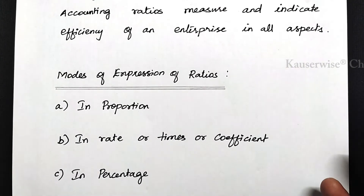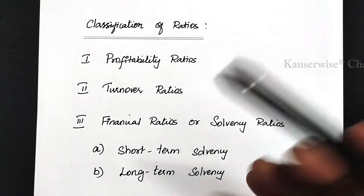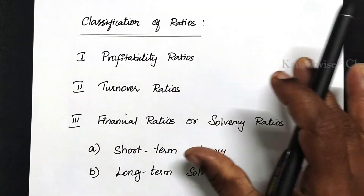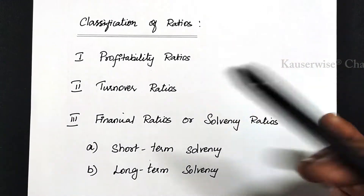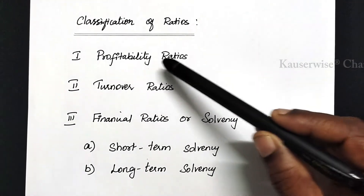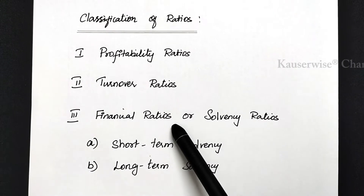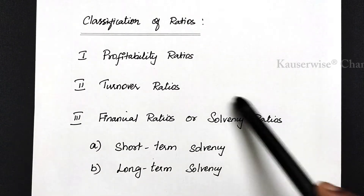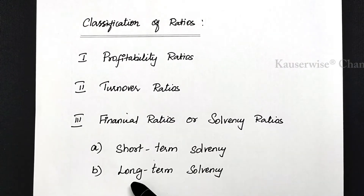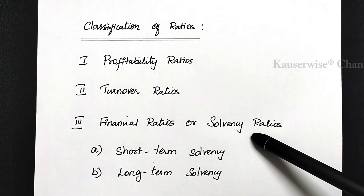Now let us see the different classifications of ratio analysis. Ratios are classified in several ways; different approaches are used for classifying ratios. Based on the purpose and functions, ratios are classified into three categories: the first one is profitability ratios, the second is turnover ratios, and the third is financial ratios or solvency ratios. Solvency ratios are again classified into two categories: short-term solvency and long-term solvency.